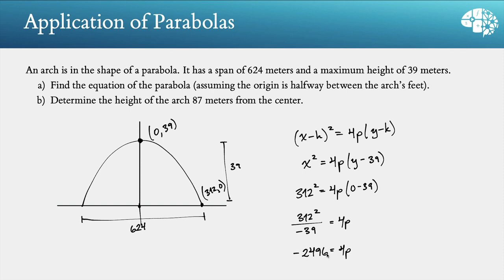And that's 4p. And so we can take this value and plug it in to this spot here to get our equation. So now I've got my equation is x squared equals negative 2,496 times y minus 39. So that's for part A, finding the equation.